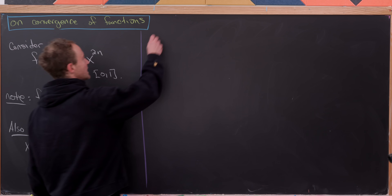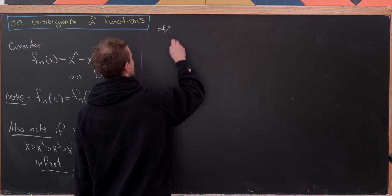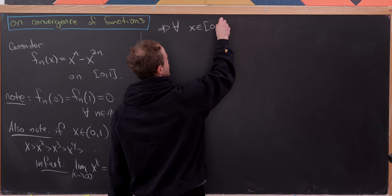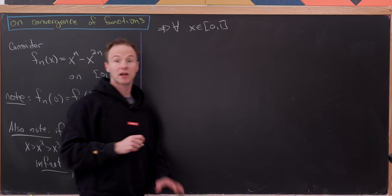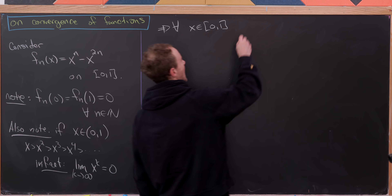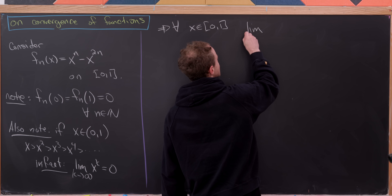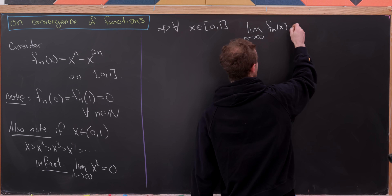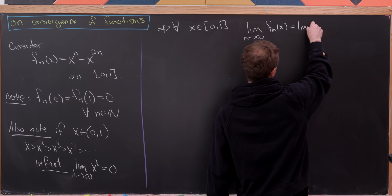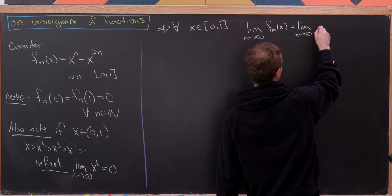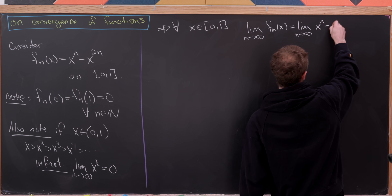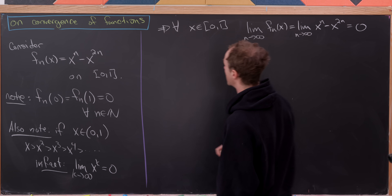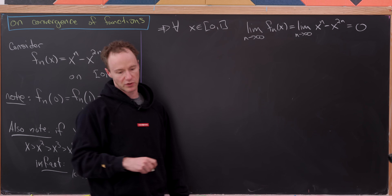We can put all of this together to see that for all x on the interval from 0 to 1 inclusive, the limit as n goes to infinity of f sub n of x equals the limit of x to the n minus x to the 2n, which equals 0 because both terms approach 0.